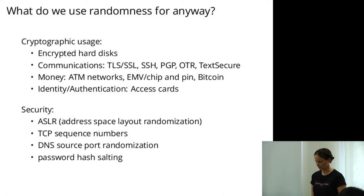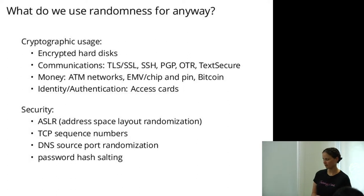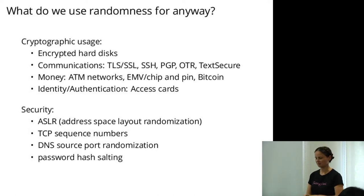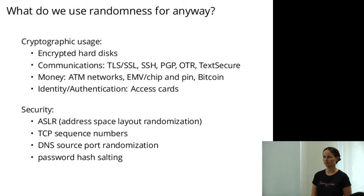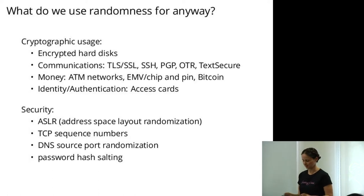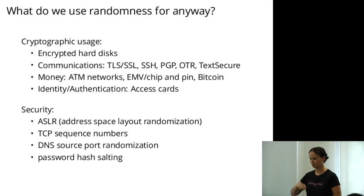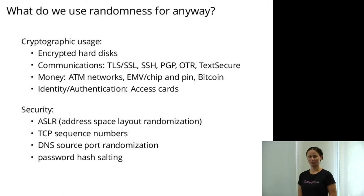There are also a number of non-cryptographic or semi-cryptographic and more systems-level uses of randomness in security. Things like address space layout randomization, which is a protection against buffer overflows — you just randomize where things are in memory so people don't know where to send their buffer overflow. TCP sequence numbers protect against people injecting traffic into your TCP stream, and DNS source port randomization protects against people spoofing DNS responses.